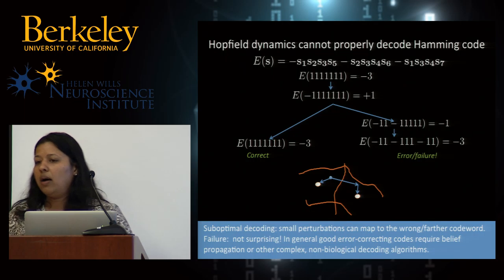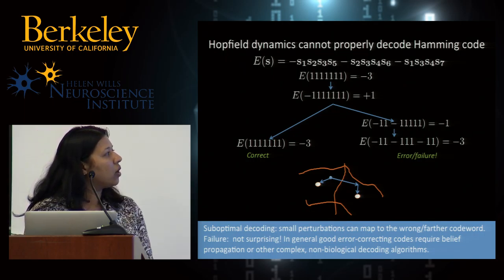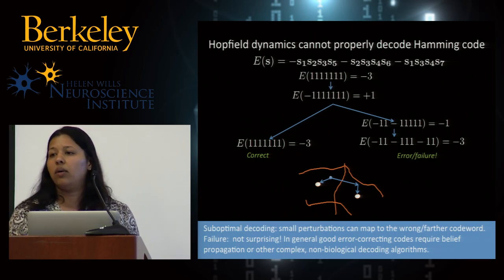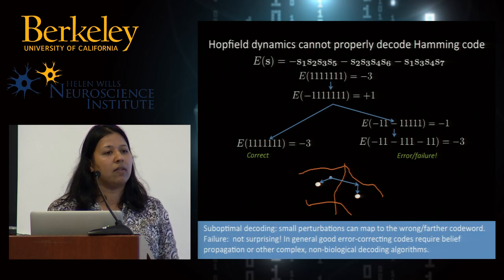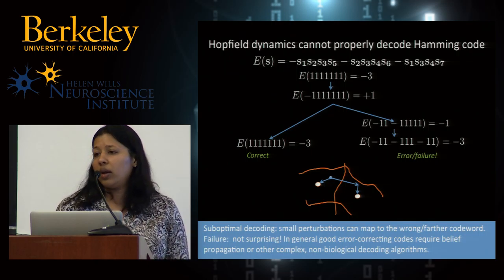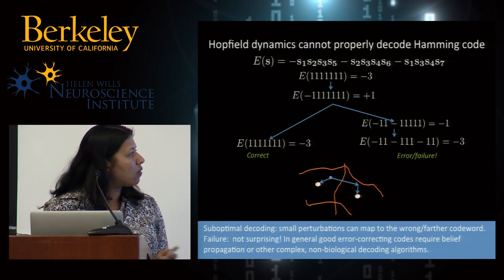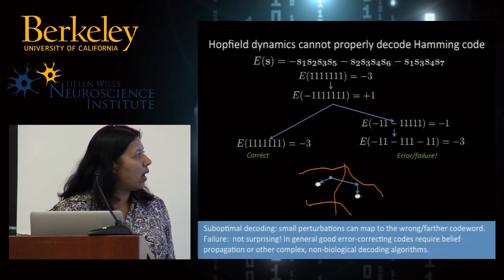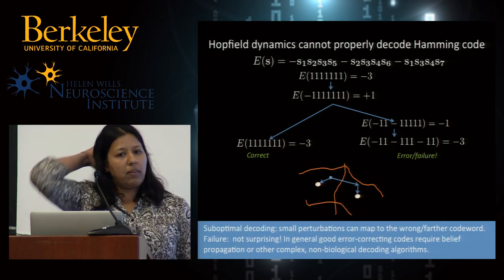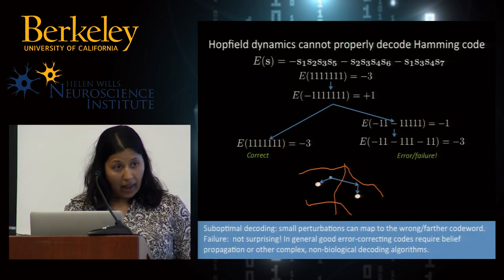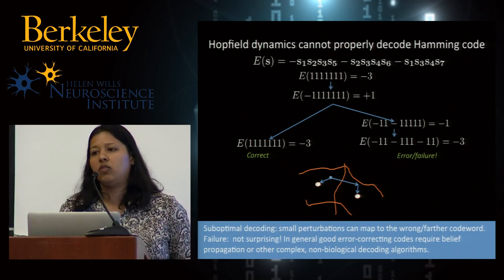Should we be surprised? No. In general, strong error correcting codes require very complicated decoding algorithms — things like belief propagation — which have dynamics much more complicated than simple summation and non-linearity at nodes that typical neural networks can do. They require non-biological decoding algorithms. So clearly it's not possible to implement the Hopfield-Hamming code this way. The question is: can you do this at all for any strong error correcting code?